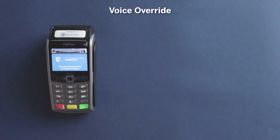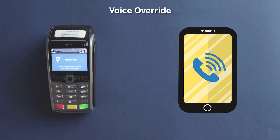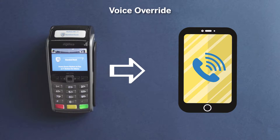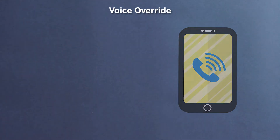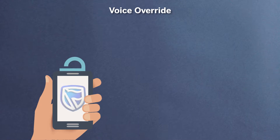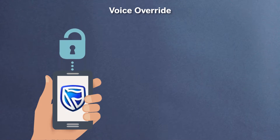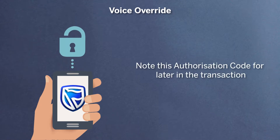Voice Override. If you are processing a sale and the Autolink device tells you to call for authorization, you need to phone the number for authorization as provided by Standard Bank. You will then be given an authorization code from the bank.